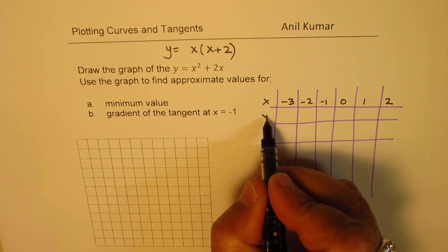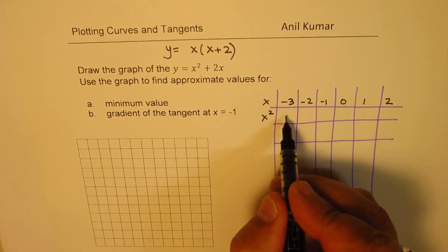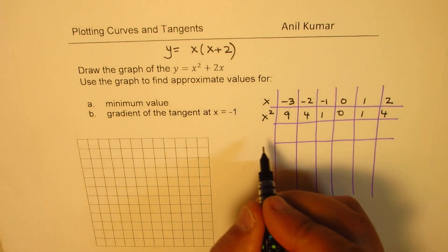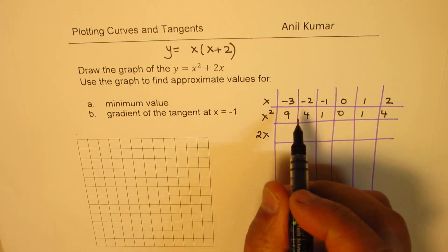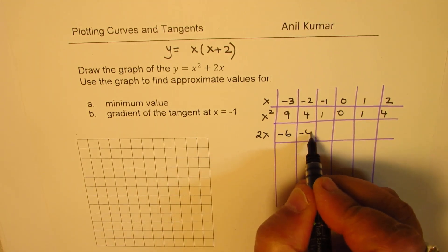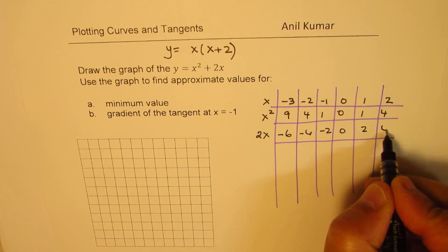So let's find the square of these values. Square will be 9, 4, 1, 0, 1 and 4. 2x, 2 times x is, you have to double these values. So get -6, -4, -2, 0, 2 and 4.